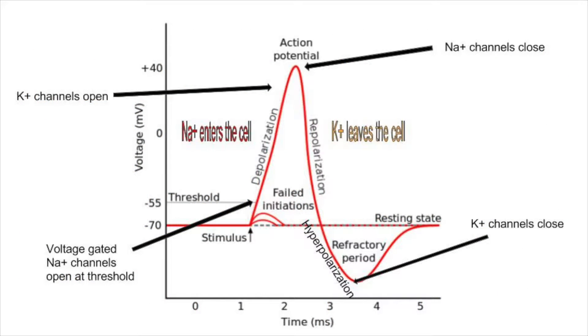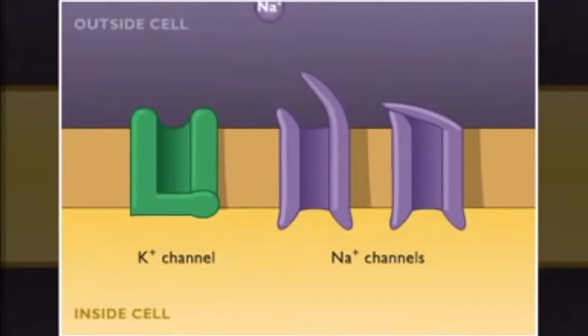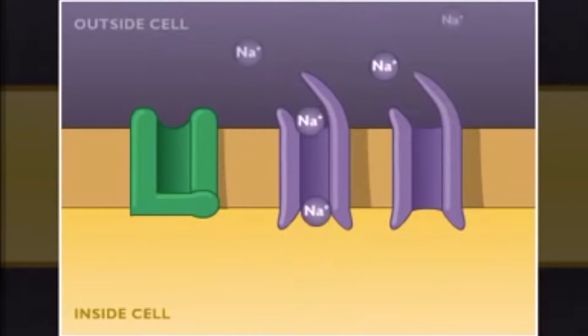An action potential begins when a stimulus depolarizes a nerve cell to threshold. When threshold is reached, voltage-gated channels open and sodium enters the cell. The rapid entry of sodium further depolarizes the cell.